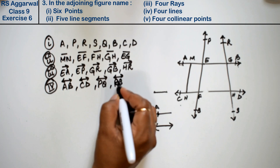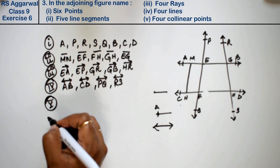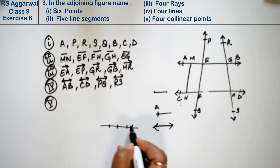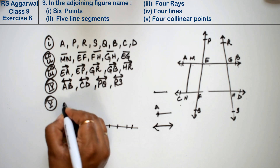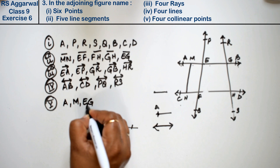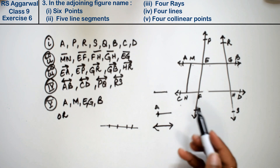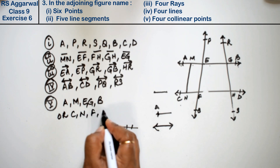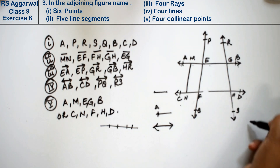Next is four collinear points. Collinear points are points that lie on the same line. So we can write: A, M, E, G, B, or C, N, F, H, D. These are the collinear points.